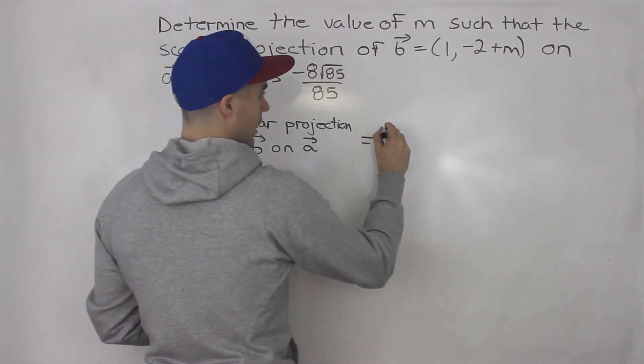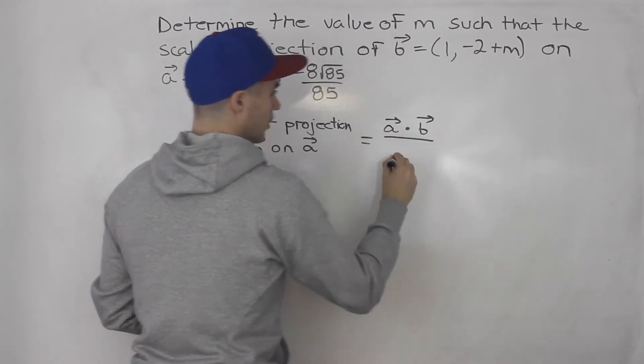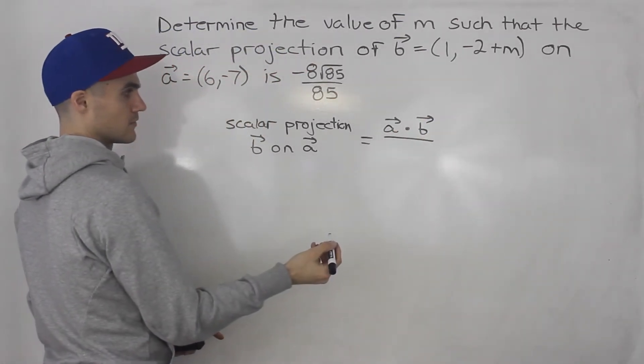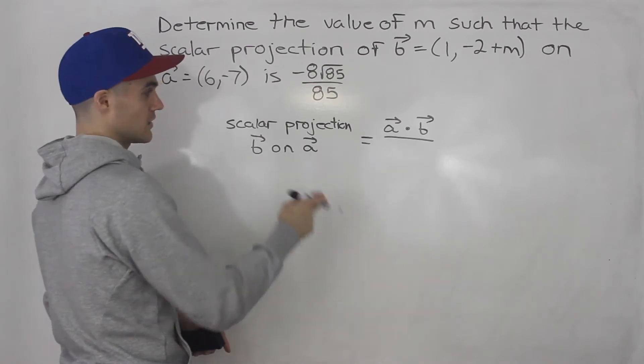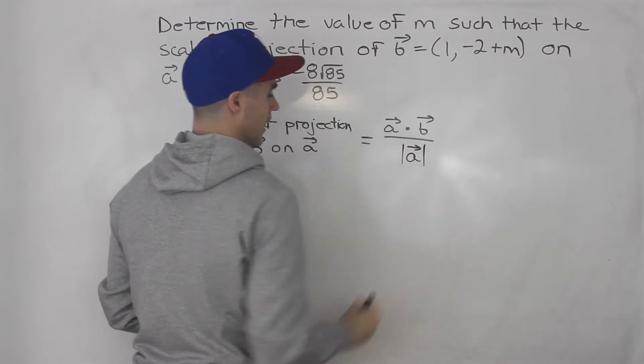It's basically the dot product between a and b all over the magnitude of the vector that we're projecting on. So we're projecting on vector a, so it's going to be all over the magnitude of a.